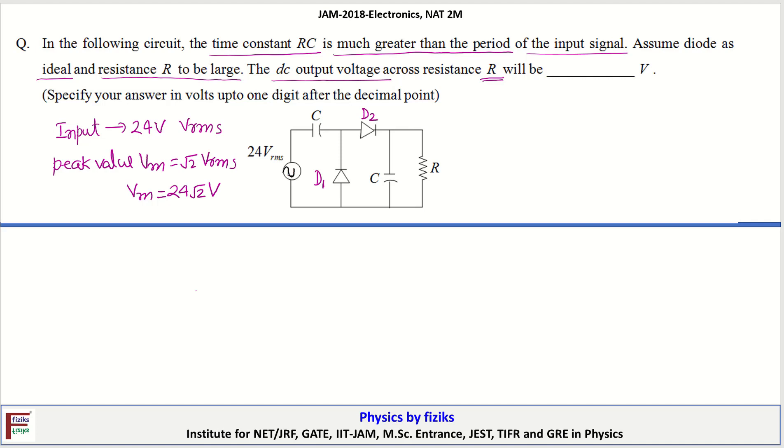Now we have to identify in which half cycle D1 conducts. So D1 will conduct during negative half cycle. So let us draw equivalent. This is the capacitor. D1 conducts so it is short circuited. Input is negative half cycle so you will get minus plus. This value is Vm.